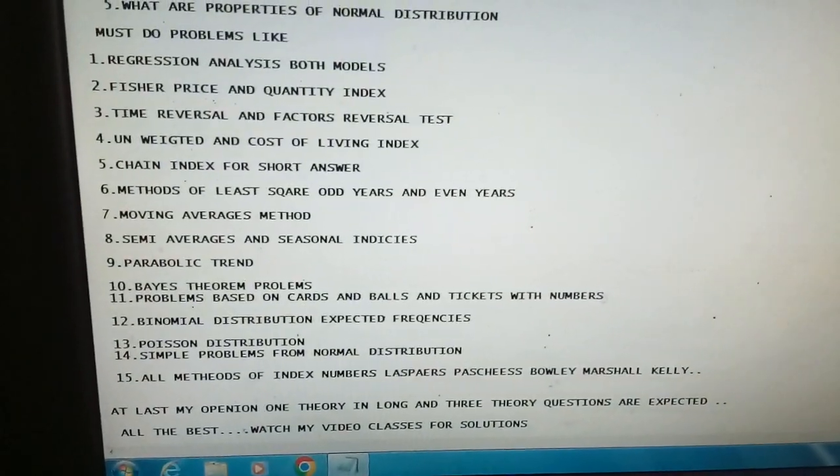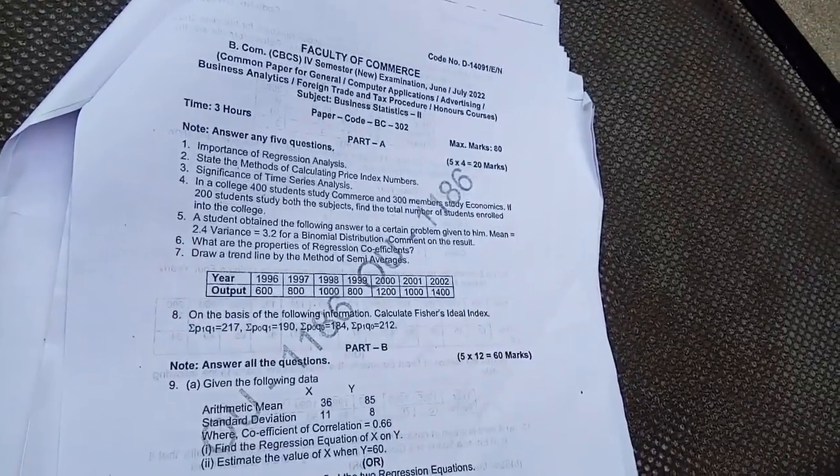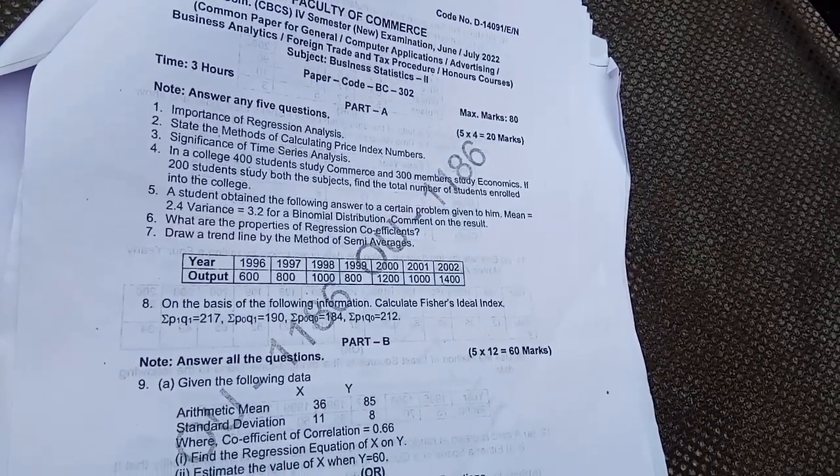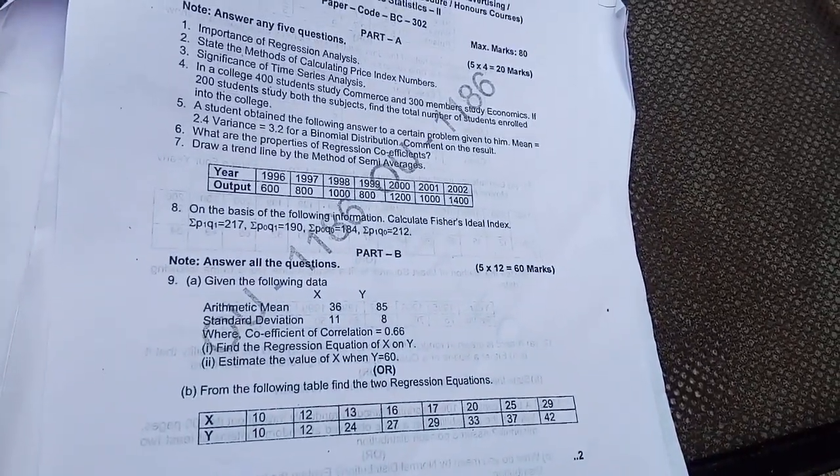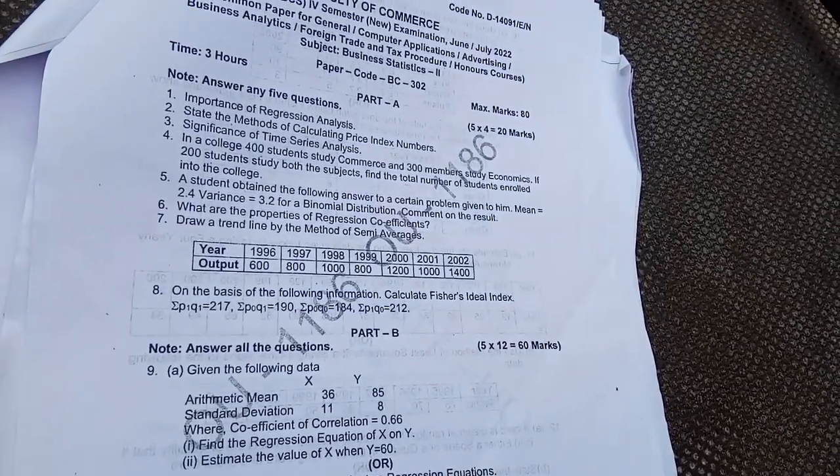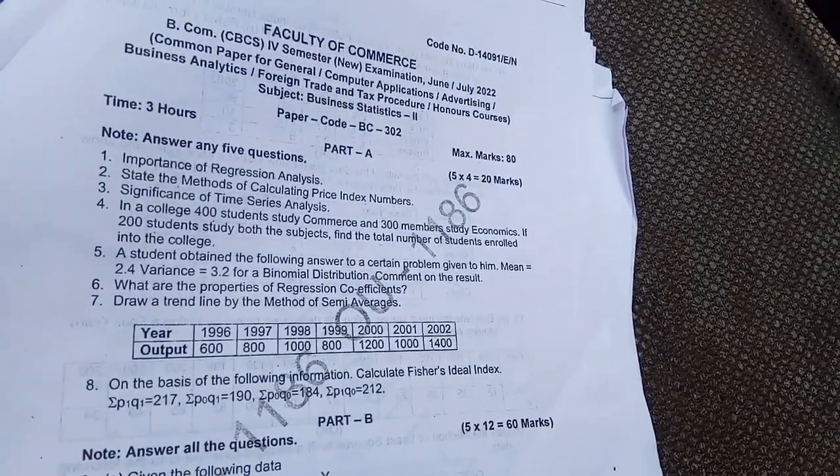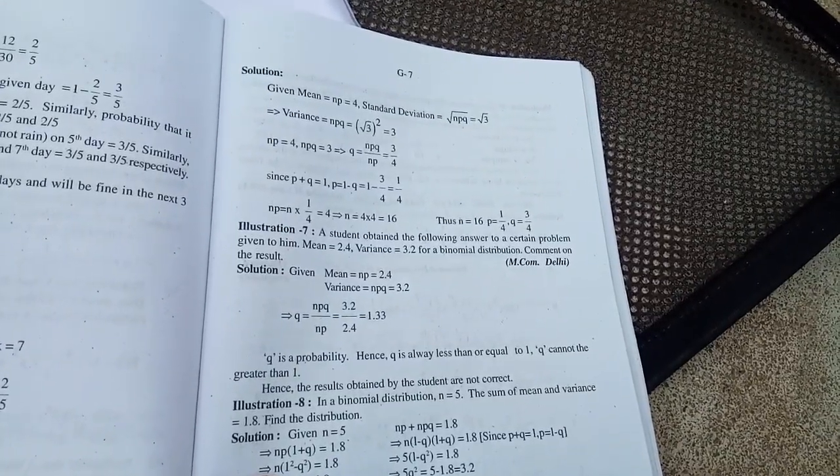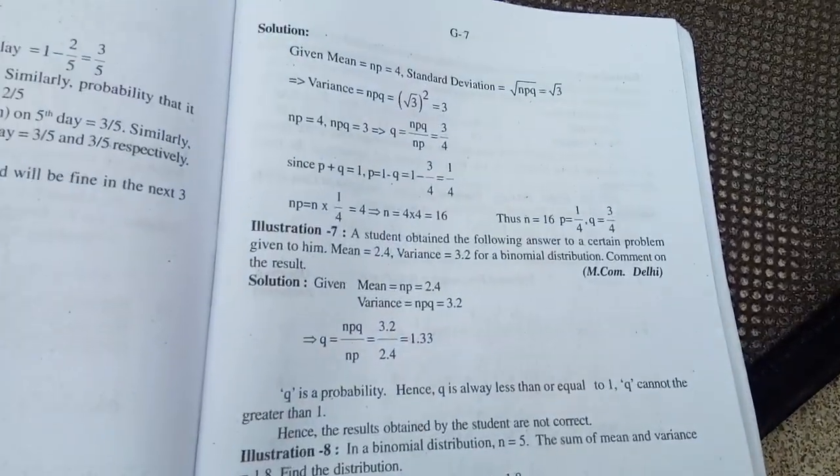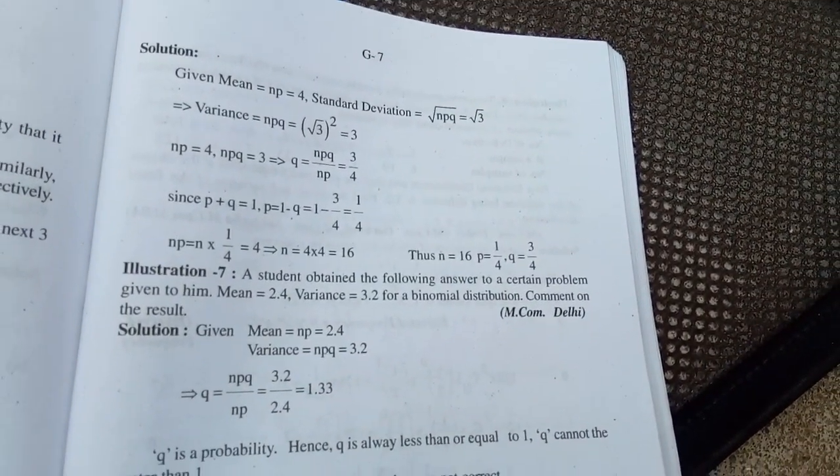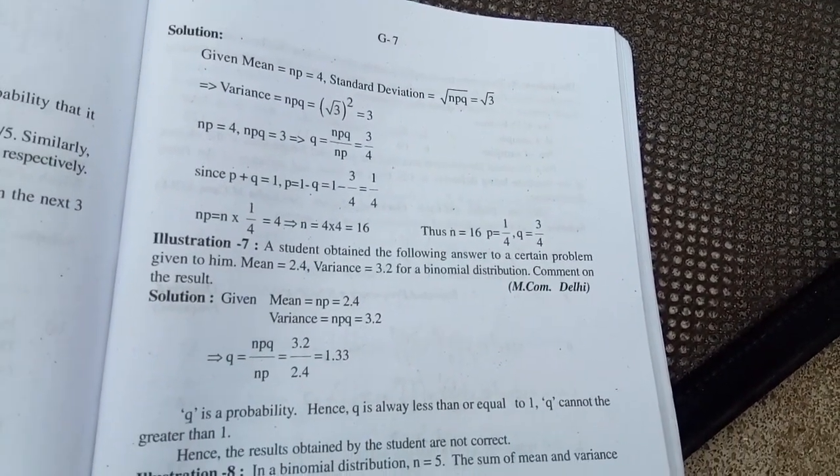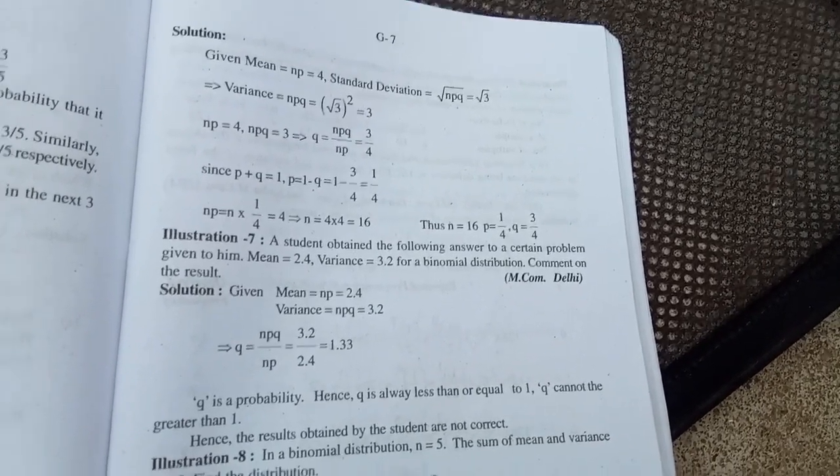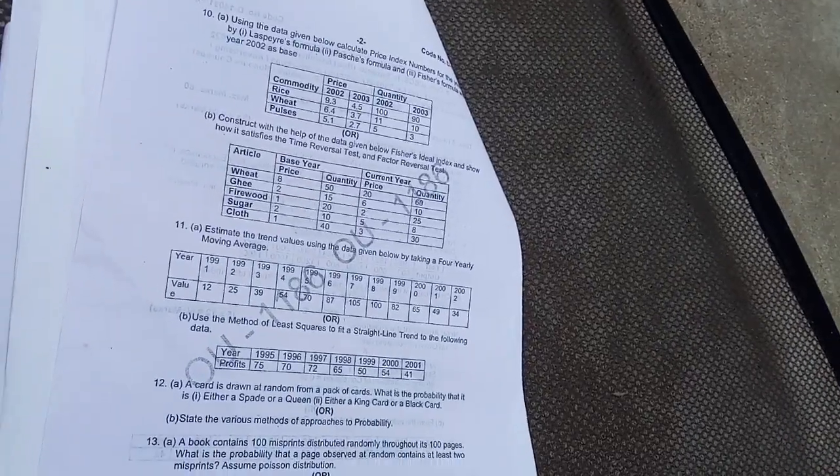Together with, I am showing a previous question paper which will be very useful to you. See this illustration seven - this time also it came in exam directly. Do prepare well. Comment on mean and variance of binomial distribution - these are previous question papers.